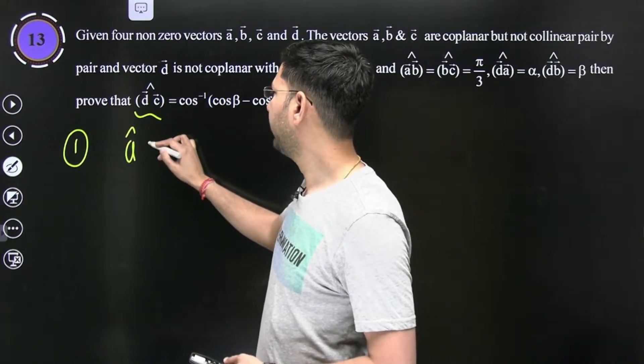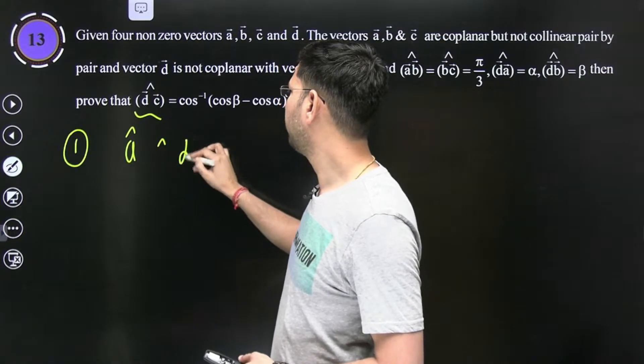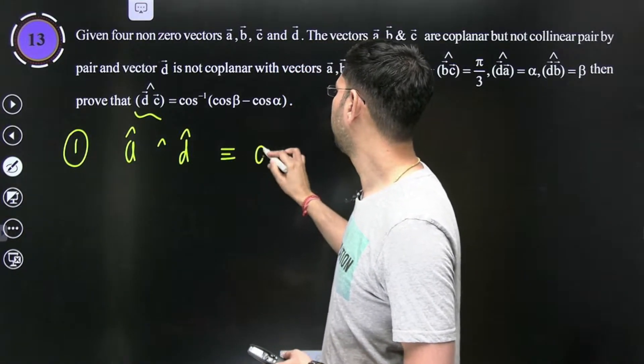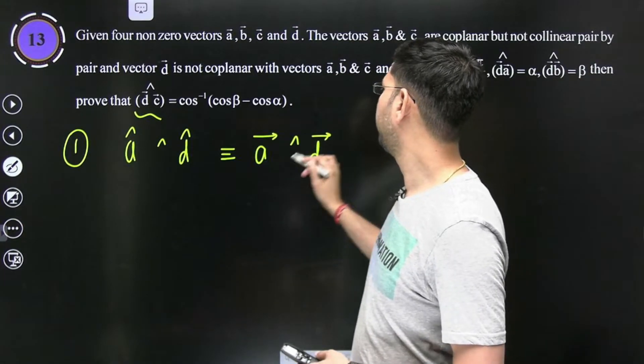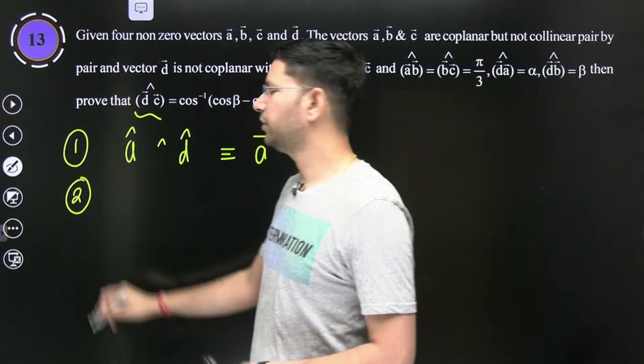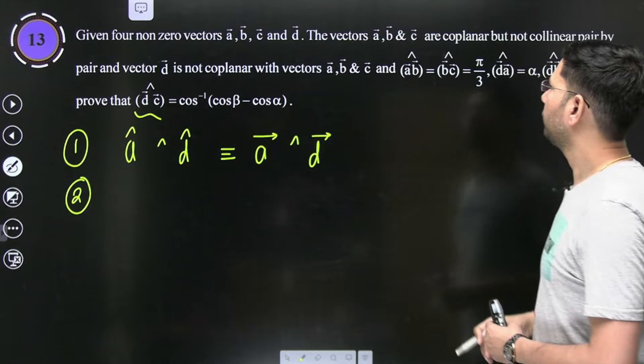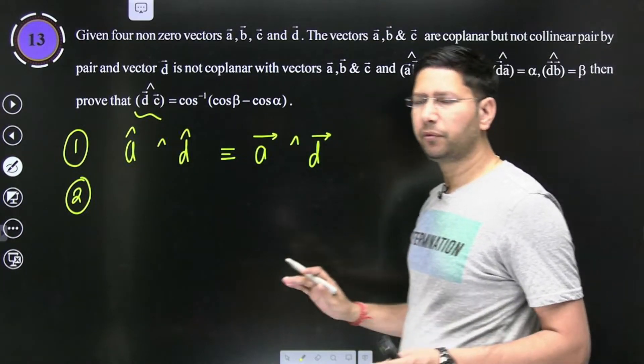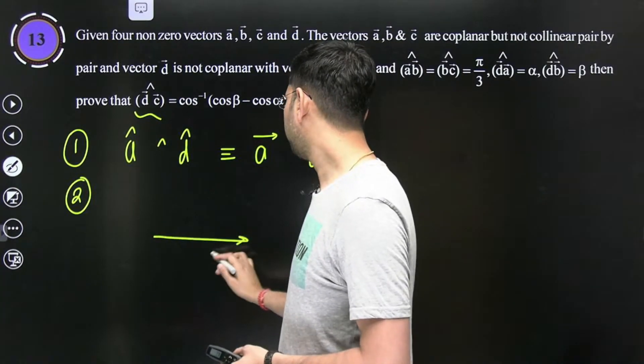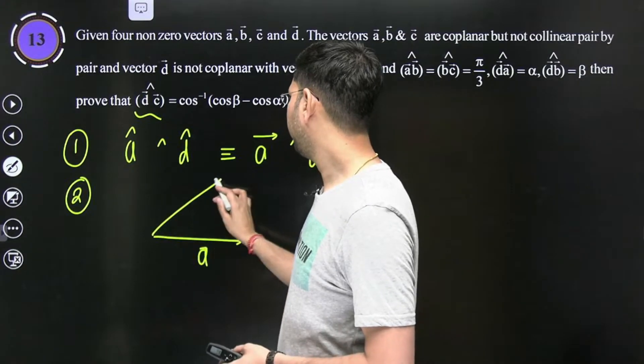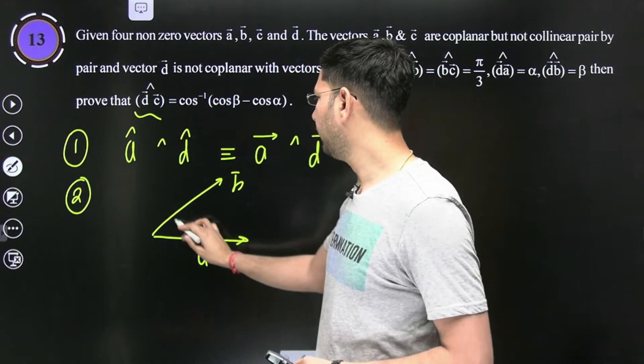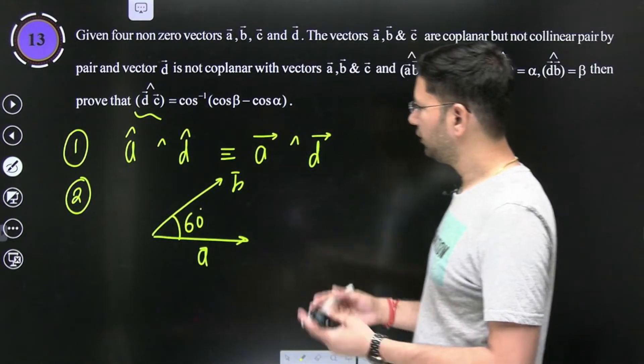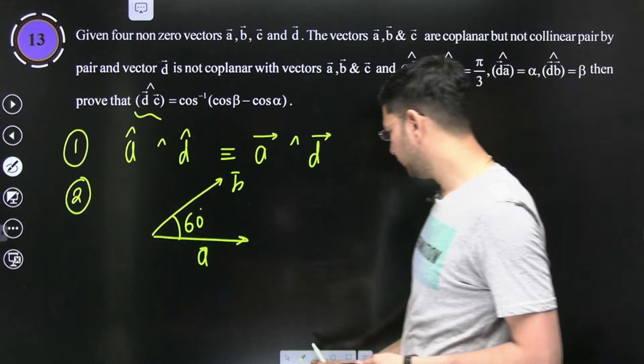Bachon a cap angle d cap is same as a vector angle d vector. A or d ke beech ka jo angle hai, ek hi hai. To bachon a or b or b or c, ek plane mein or 60 angle hai. To a vector maan lo is taraf hai, bachon b vector ye is taraf hai na, in ke beech ka angle kitna hai 60 hai, ye a ki plane mein.